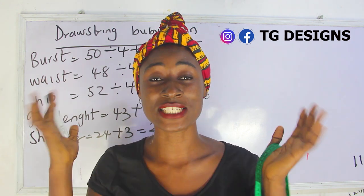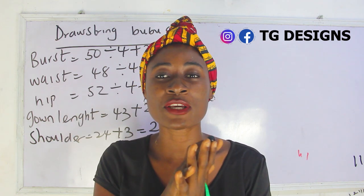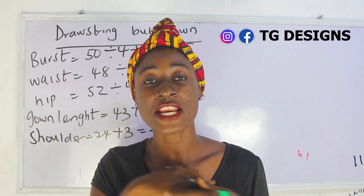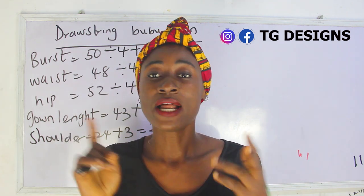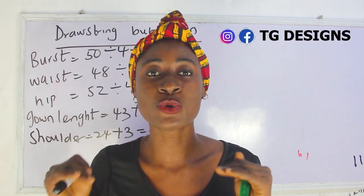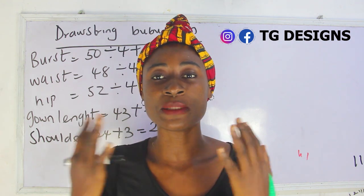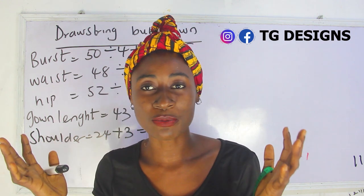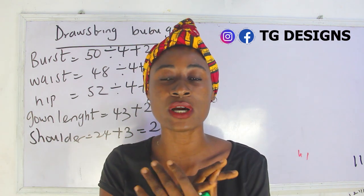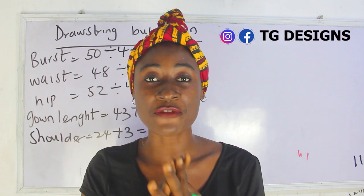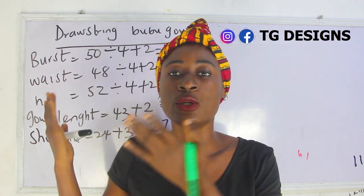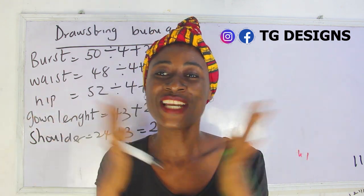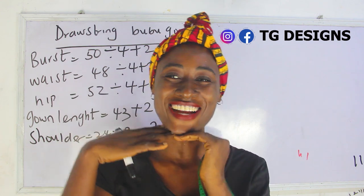I'm going to use African print fabric for this style. You can use any fabric of your choice — cotton, crepe, Lycra — it all depends on how you want to style it. The amount of fabric depends on the client's size. For me, I'm working with four yards of African print because this is a plus-size measurement. Now let's move to the cutting part.